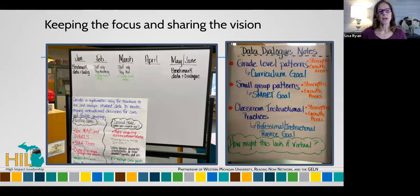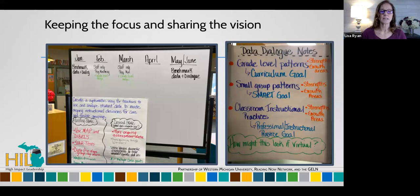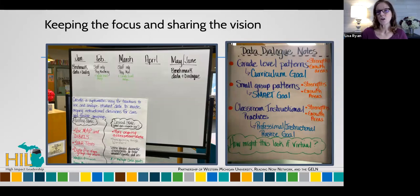You'll notice on the anchor chart, at the beginning of the year when we identify our growth edges — our classroom practice growth edges — we create a systematic way for teachers to use and analyze student data to make ongoing instructional decisions for core and flexible groupings. We put these charts around the library and do a carousel, and teams walk around and together discuss what is their existing state. Then, using research evidence-based practices such as the essential literacy practices, they look at the desired state — what does research say that we should be doing in this area? And that comes with us to every staff meeting, or it's in the background, so that teachers are constantly reminded of the why.